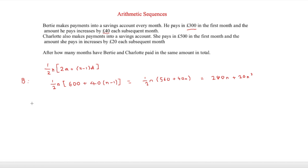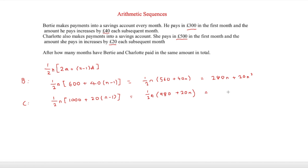For Charlotte: S_C = (n/2)(2 × 500 + (n − 1) × 20) = (n/2)(1000 + 20n − 20) = (n/2)(980 + 20n). Simplifying: S_C = 490n + 10n².